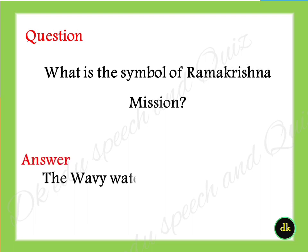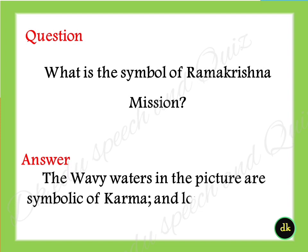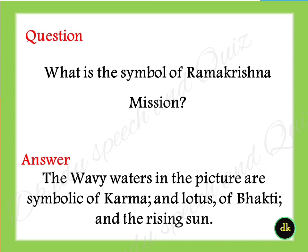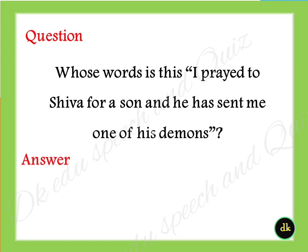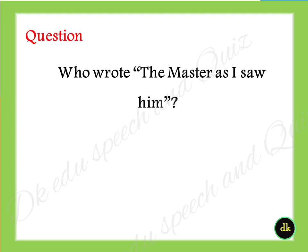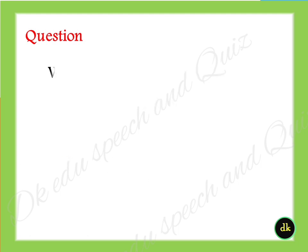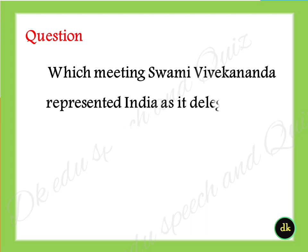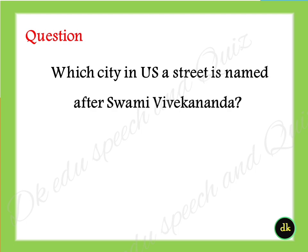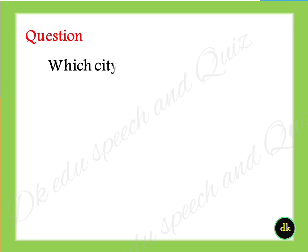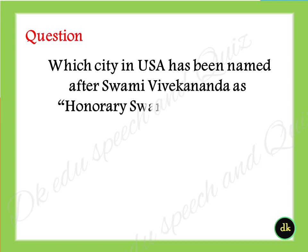What is the motto of Ramakrishna Mission? Answer: The waters in the picture are symbolic of Karma and the lotus of Bhakti and the rising sun of Jnana. Whose verse is: 'I prayed to Shiva for his son and he has sent me one of his demons'? Answer: Vivekananda's mother. Who wrote 'The Master as I Saw Him'? Answer: Sister Nivedita. Which meeting did Swami Vivekananda represent India as its delegate? Answer: Parliament of Religions. Which city in the US has a street named after Swami Vivekananda? Answer: Chicago.